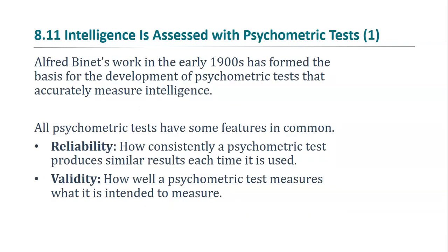To understand how intelligence is measured, we need to know about psychological tests in general. Two components are critical to determining how useful a test is. Reliability is the degree of consistency of scores — does it give the same score to the same individual each time? Validity is how well the test measures what it's intended to measure. A test may have fantastic reliability and terrible validity. For example, if a bathroom scale consistently tells me I weigh 140 pounds, it's perfectly reliable but completely invalid.